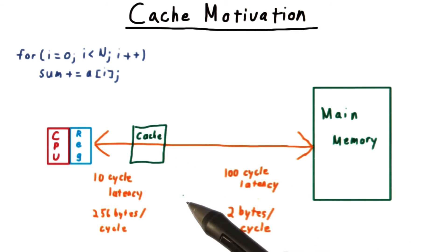If it finds the data it needs, great. We just achieved a factor of 10 speedup. We call this a cache hit. If the data it wants is not in the cache, then we have to go to main memory. We call this a cache miss.